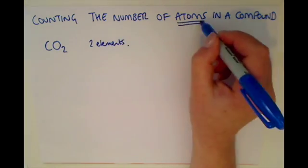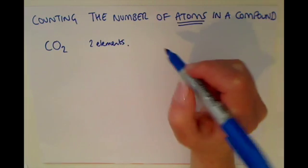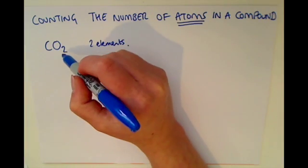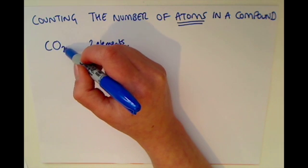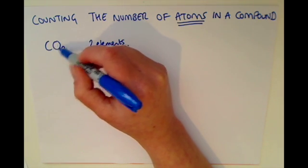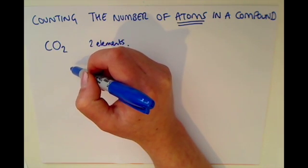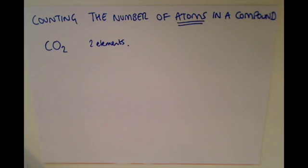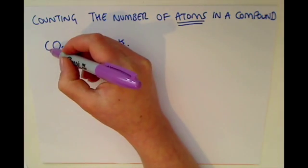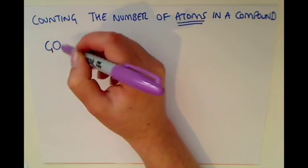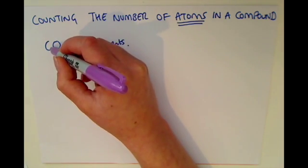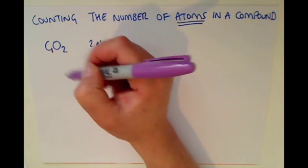But now we want to count the number of atoms in a compound. Where there is a number below the element, it will tell you how many atoms of that element are in the compound. Now the only thing that is missing is if there is only one atom, they never write a number one in the compound name. It just makes everything far too complicated if you have got a number one there.